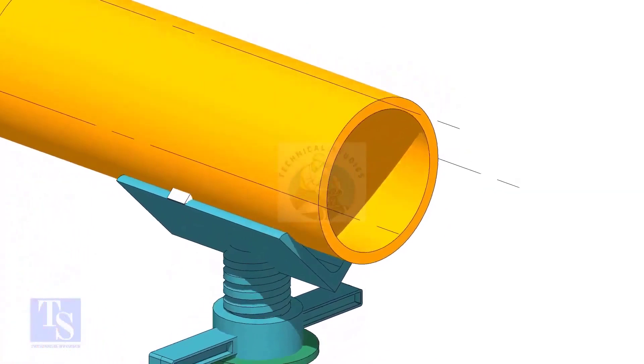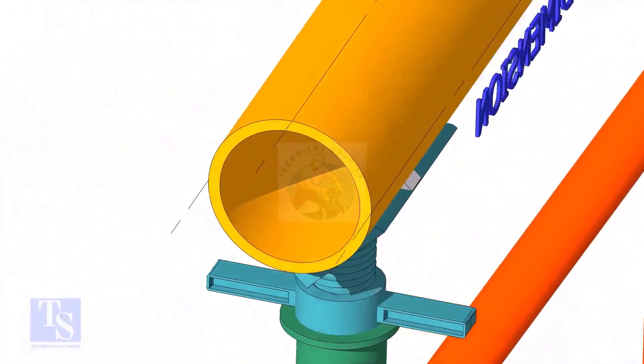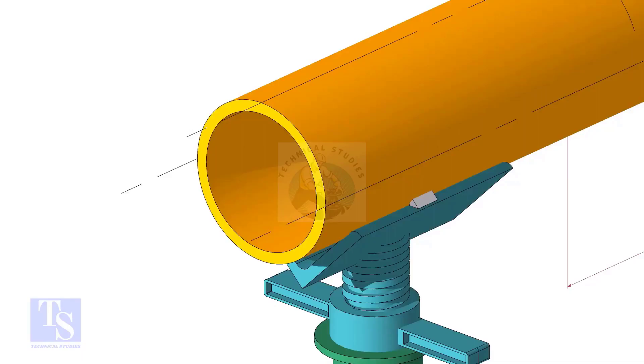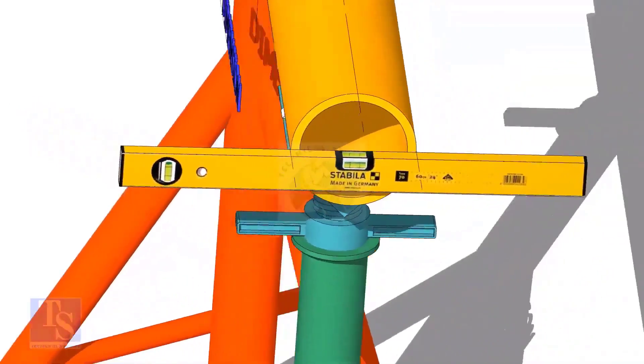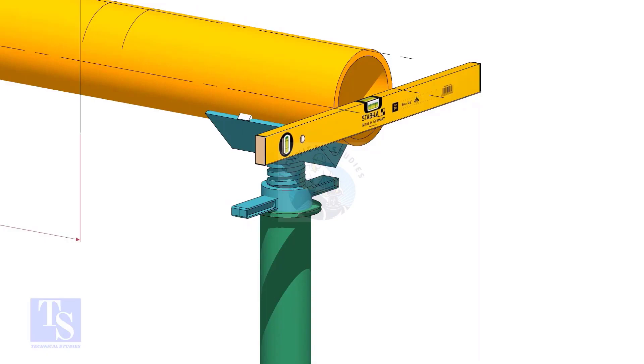After leveling the pipe, mark the center line and two quarter lines. Arrest the pipe. If required, make small tack welds.